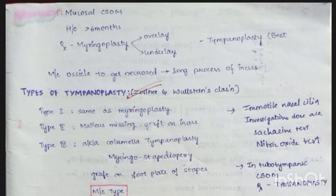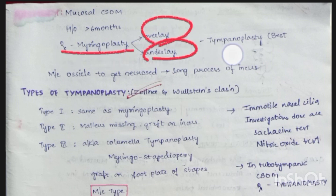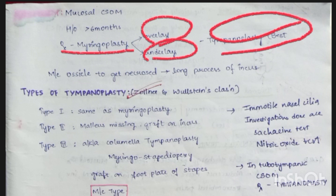Safe CSOM (mucosal CSOM) has history greater than six months. Treat with myringoplasty — overlay or underlay technique; tympanoplasty is best. The most common ossicle to get necrosed is the long process of the incus. Types of tympanoplasty follow the Zollner and Wullstein classification: Type 1 is same as myringoplasty; Type 2 — malleus missing, graft on incus.